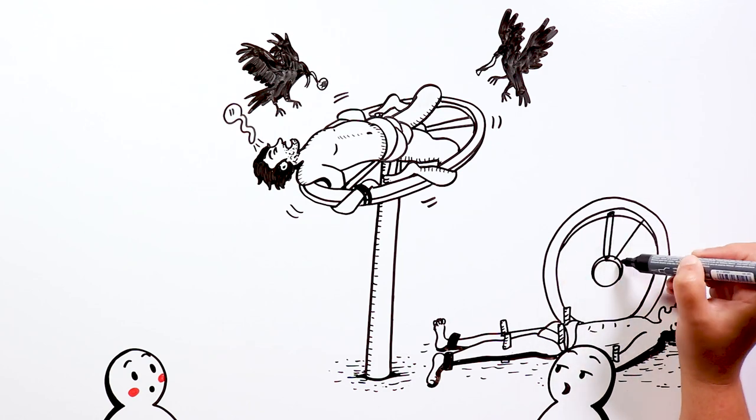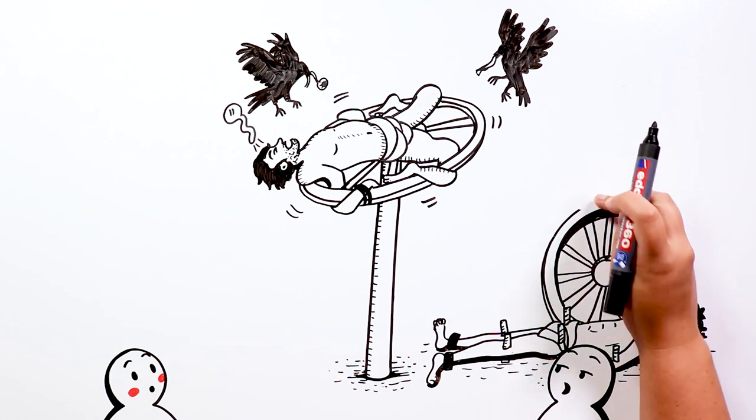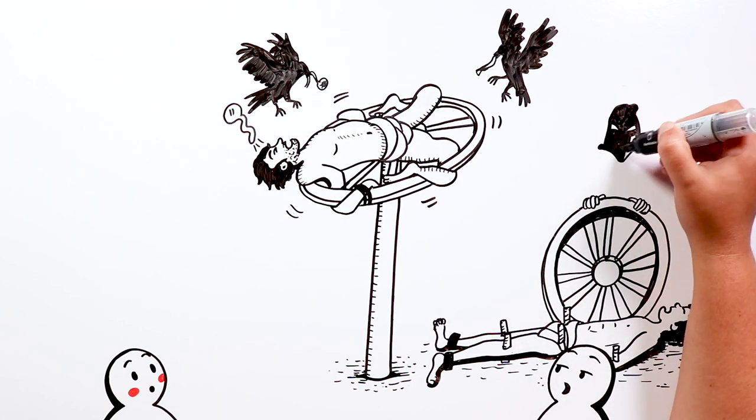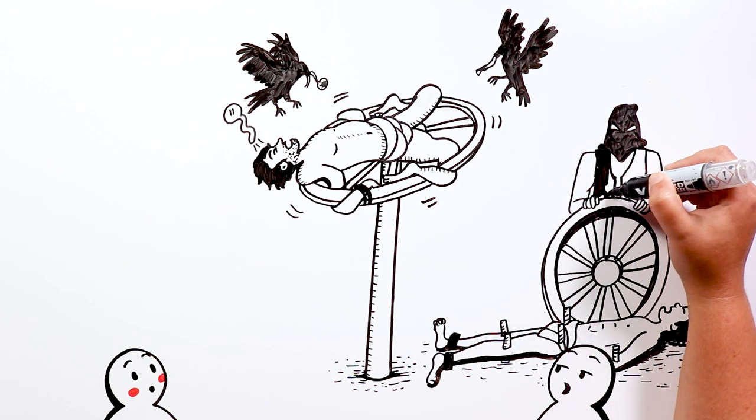Then the executioner, with the wheel, crossed bone after bone and joint after joint, trying not to kill the victim.